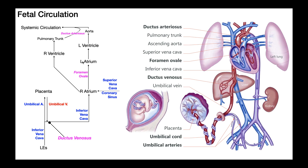Blood in the left atrium then goes to the left ventricle, which goes out the aorta, and as we'd expect, blood from the aorta goes to the systemic circulation to supply oxygen and nutrients to all peripheral tissues. But there's another difference — not all blood moves from the right atrium to the left atrium. Some goes through the right-sided pathway: right atrium to right ventricle to the pulmonary trunk. But the pulmonary trunk leads to the lungs, and we don't want large blood flow going there. It turns out the pulmonary trunk has another connection that links it to the aorta.